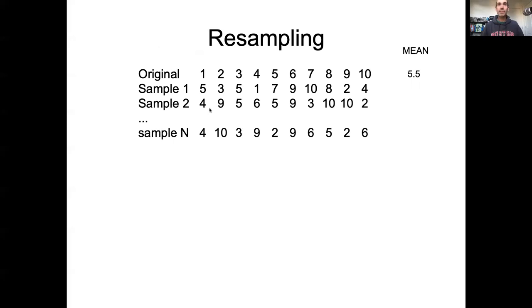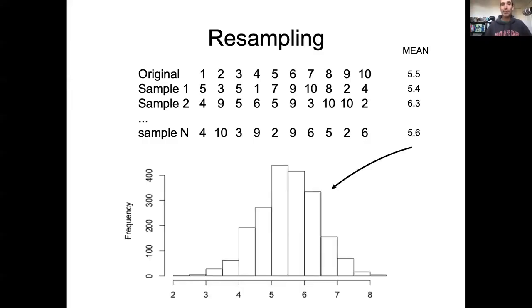We can repeat it and repeat it, and we do this n times, taking a draw from the original data just randomly. Each time we do this, we can calculate a summary statistic. In this first sample, the mean was 5.4 instead of 5.5. Next one, it was 6.3 because I got these two 9s and two 10s. That shouldn't happen very often, so 6.3 is a good bit above average. Then 5.6, that's just a little bit above average.